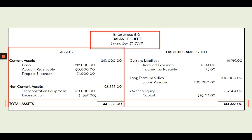Setting up the balance sheet: number one, we set a heading; number two, we present the assets — first the current assets, the easily liquidated ones, followed by the non-current assets. Number three, we present liabilities and equity: current liabilities on top, followed by long-term liabilities, then owner's equity. Number four, we total the asset accounts and the liability and equity accounts. As we can see, their totals are both 441,333 pesos.